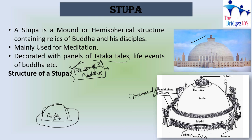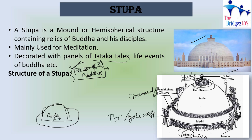On top of the Anda there will be a square-shaped Harmika. Above the Harmika there is a Yasti, which is a pillar-shaped element on which there are different umbrella tiers known as Chatri. So the structural elements are: Vedika (the railing), the Pradakshana path, the Anda, the Harmika, the Yasti, and the Chatri. Apart from these, some stupas have gateways on their railings which are known as Toranas. On these Toranas, many sculptures like Yakshas, Yakshanis, Dwarapalakas, and Jataka tales and life events of Buddha have been sculpted, making them very important for art and culture.